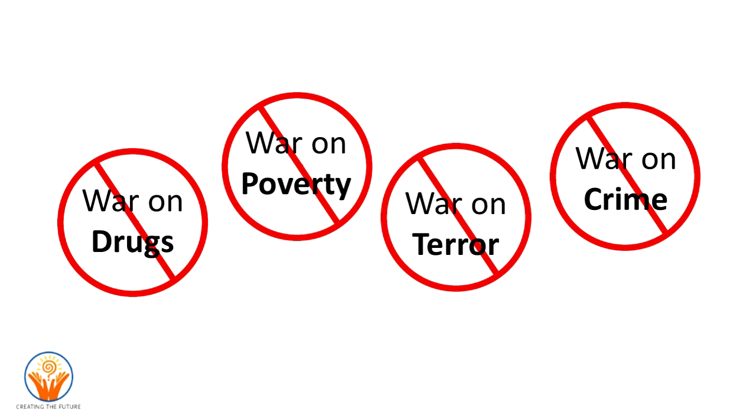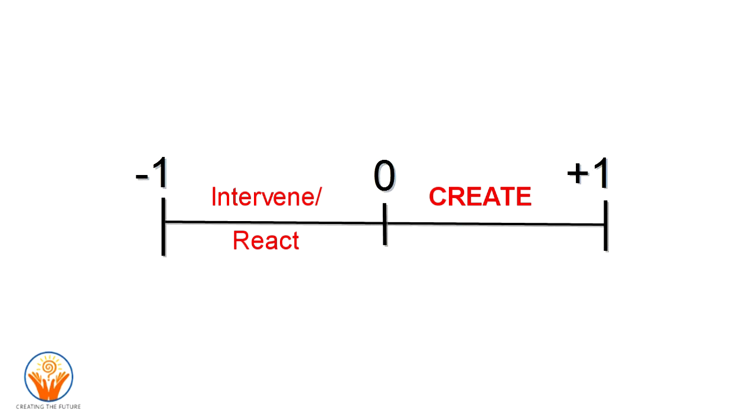And here's how I know they are 100% guaranteed to fall short. Because it is mathematically impossible to create something positive by eliminating something negative. Let me repeat that, and perhaps you might write it down and post it to your bulletin board or your refrigerator.